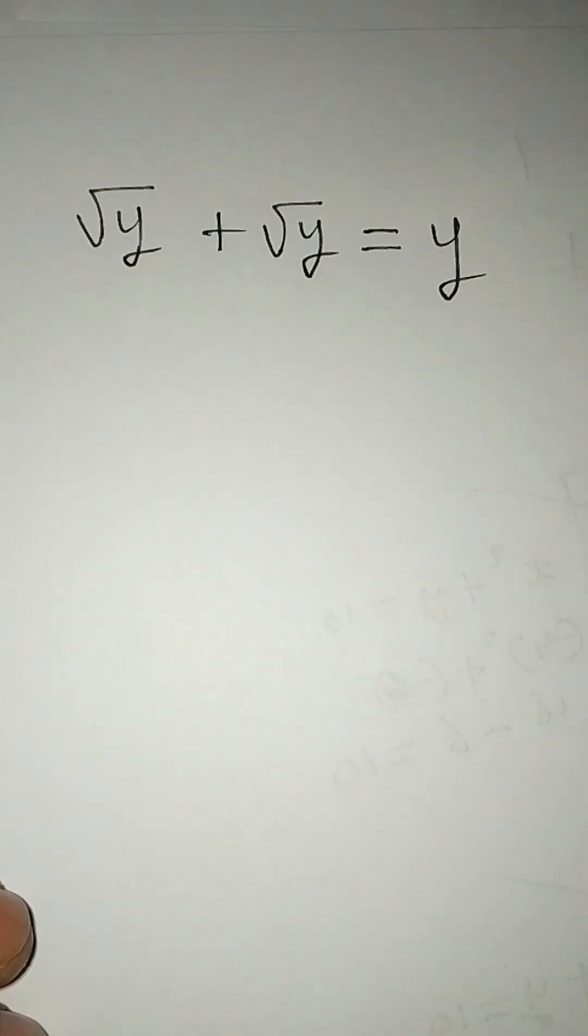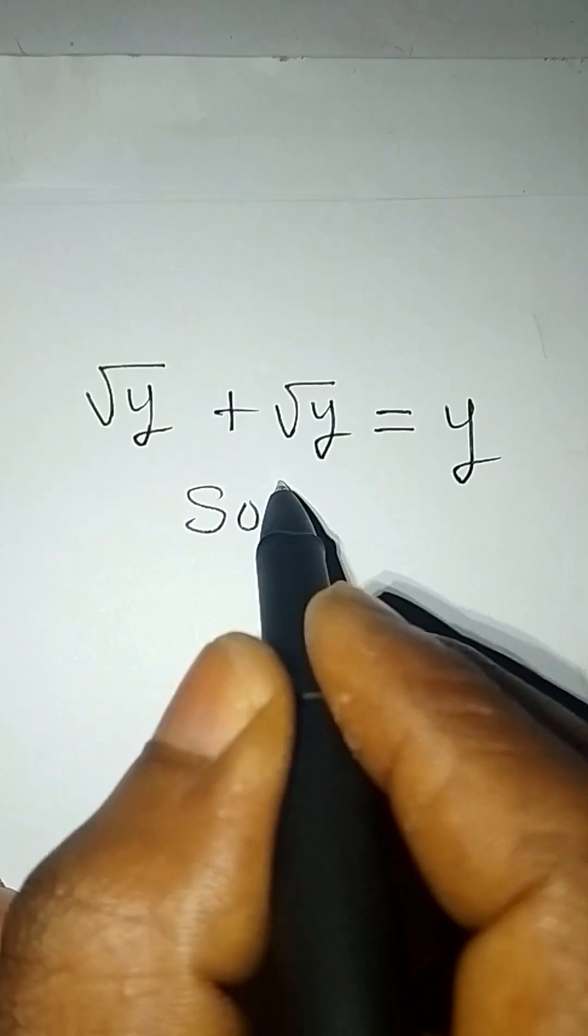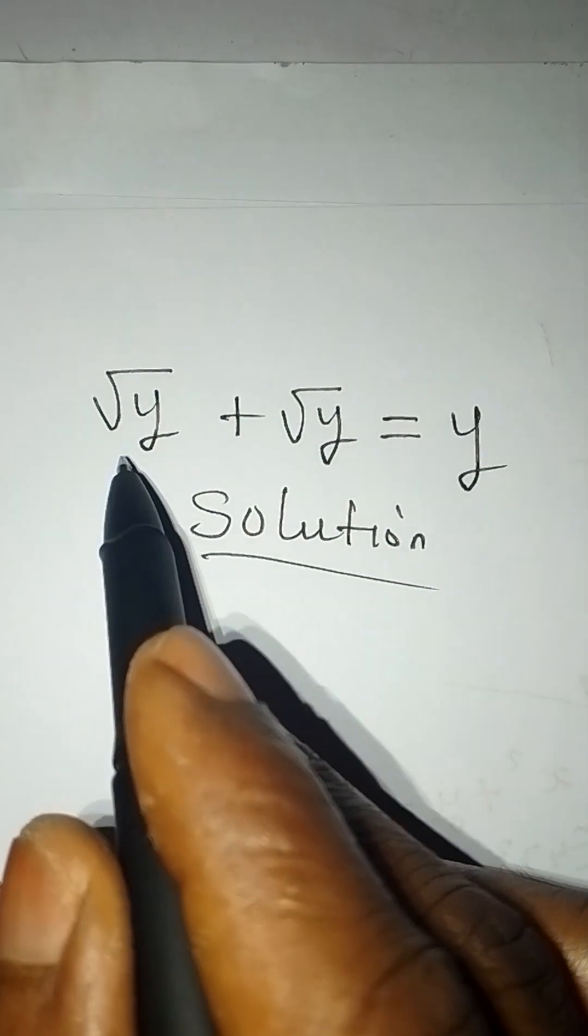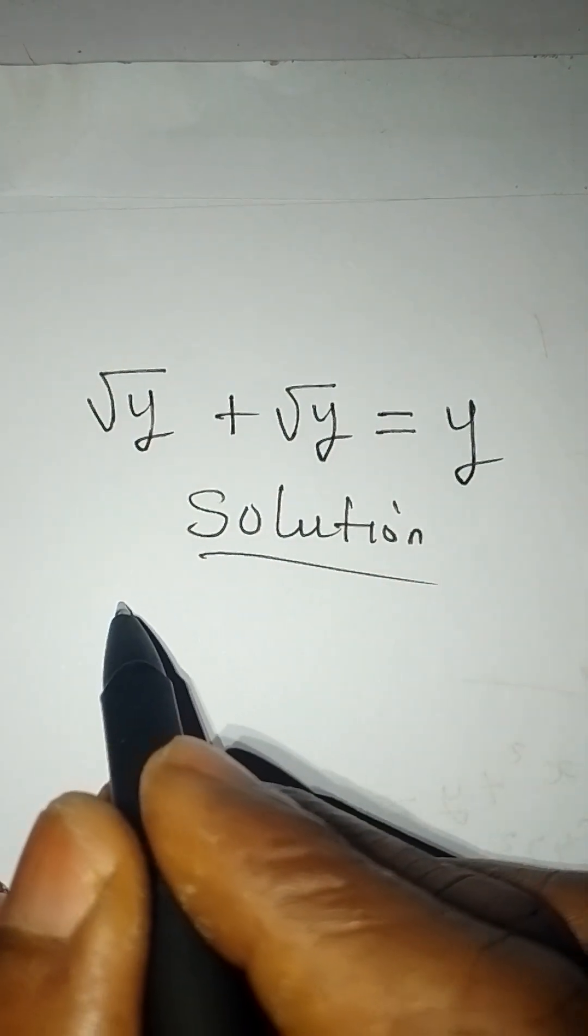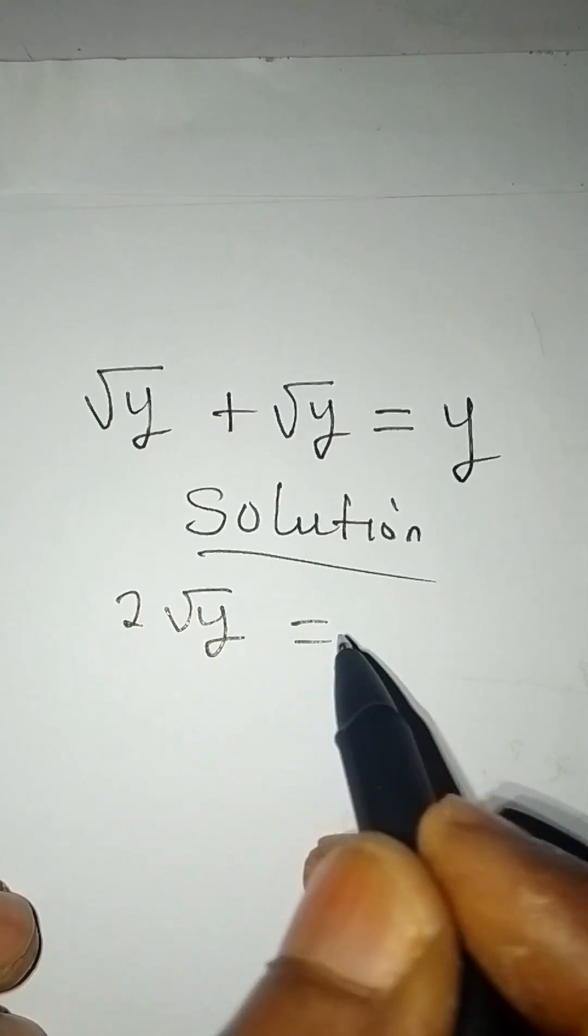Hello everyone, let's solve this problem. We have √y + √y, which gives us 2√y, and this is equal to y.